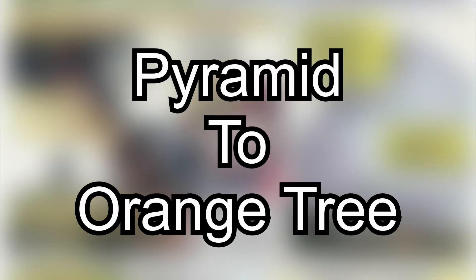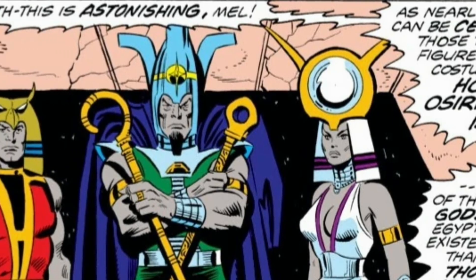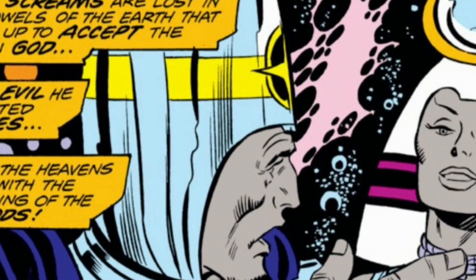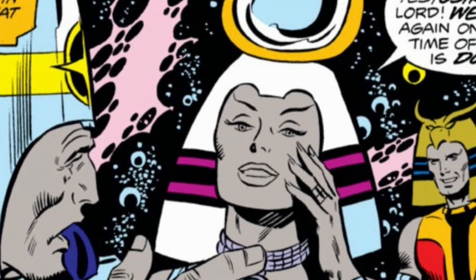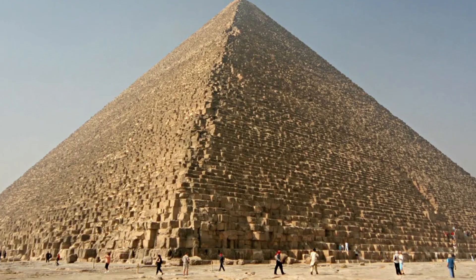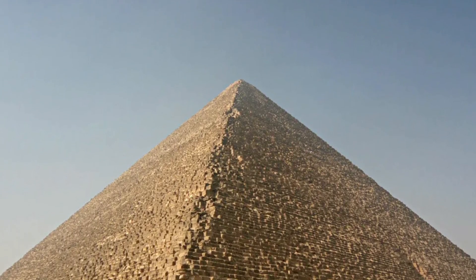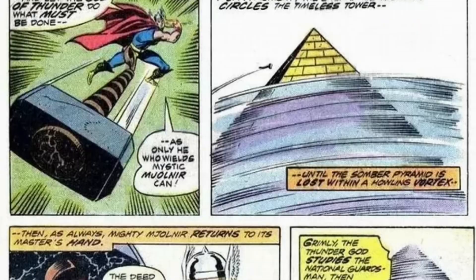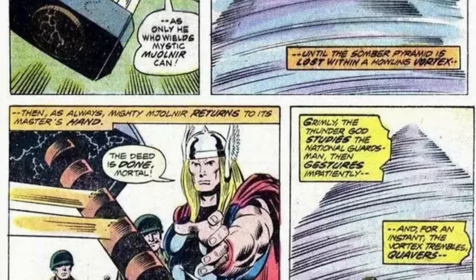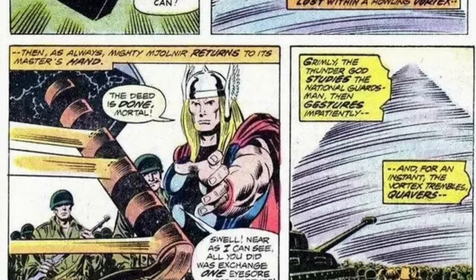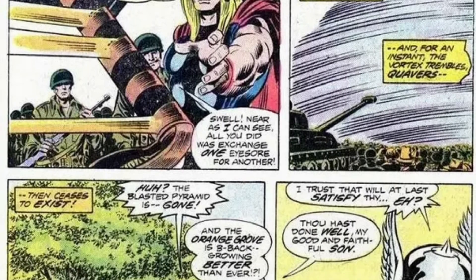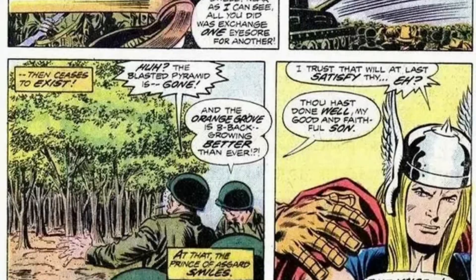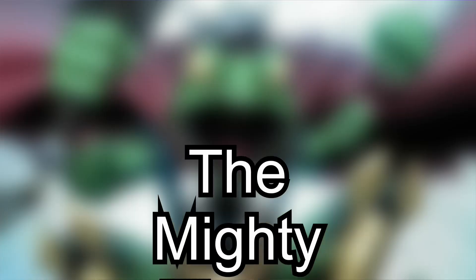Two: Transform to Pyramid. When the Egyptian gods Horus, Osiris, and Isis create a giant pyramid in the middle of San Diego, it destroys countless orange trees. So in response, Thor threw Mjolnir at the pyramid, it creates a vortex around the pyramid, and then all of a sudden the pyramid turned into a grove of orange trees. I didn't even know that was one of his powers, but it's still pretty cool.